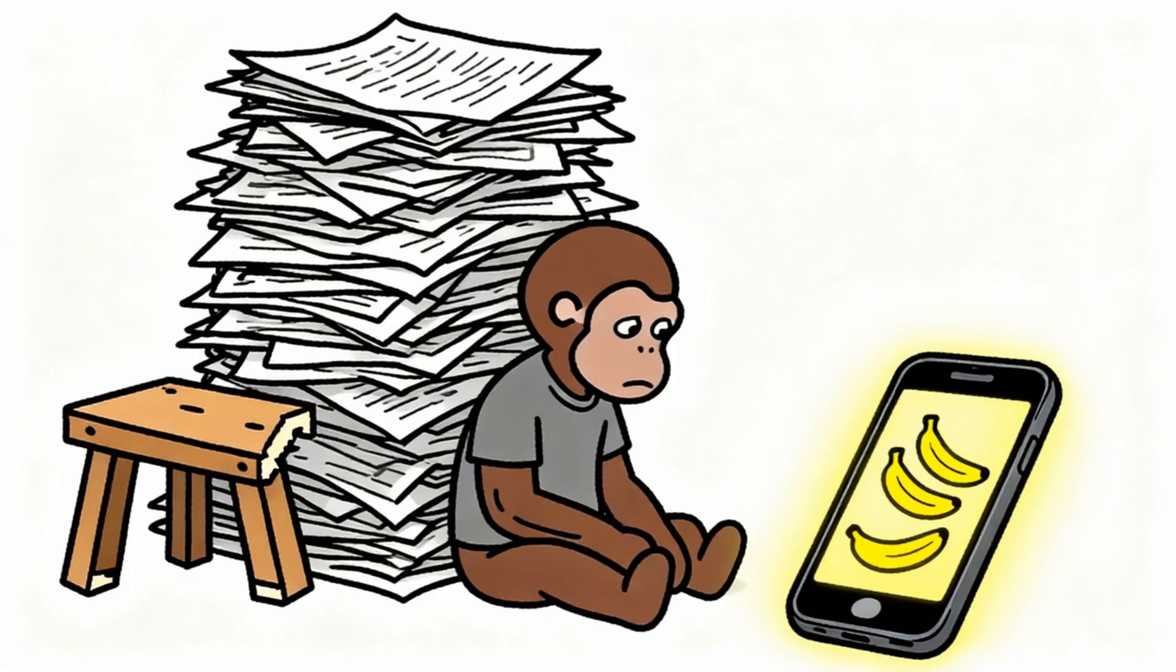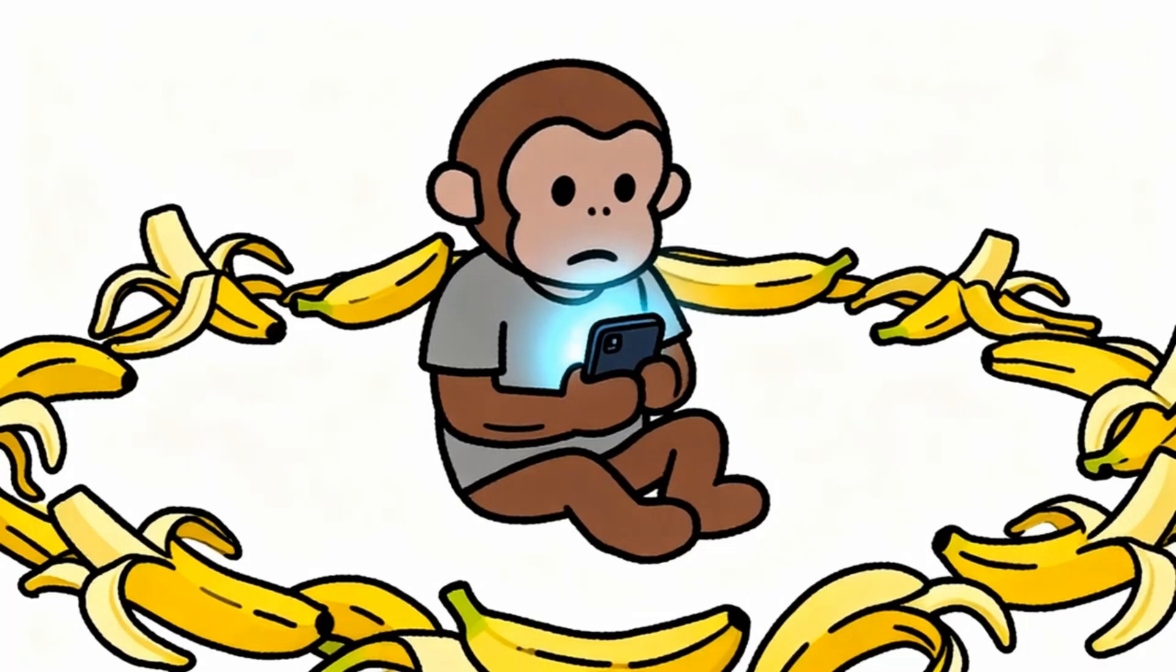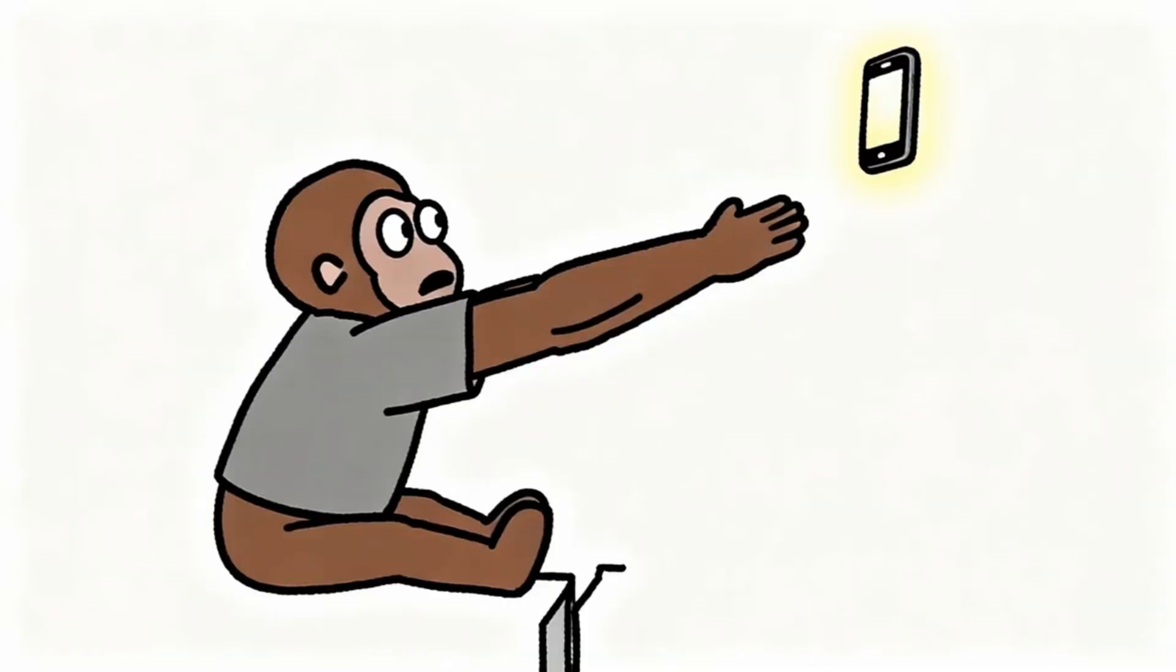Monkey brain becomes so accustomed to instant gratification that delayed gratification feels like torture. The patience required for meaningful accomplishments disappears completely. This creates a vicious cycle where monkey seeks more artificial dopamine to escape the emptiness caused by artificial dopamine. The more artificial bananas monkey consumes, the less satisfying real bananas become. The less satisfying real bananas become, the more artificial bananas monkey needs. Round and round the cycle spins, getting worse with each rotation.